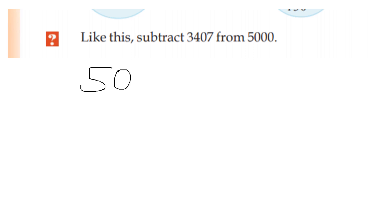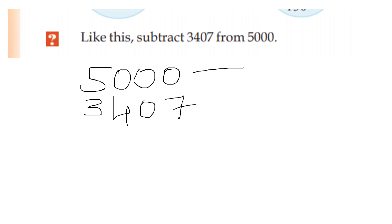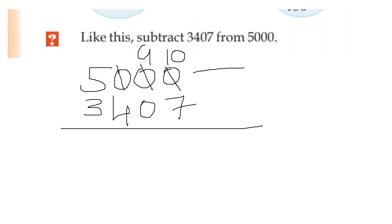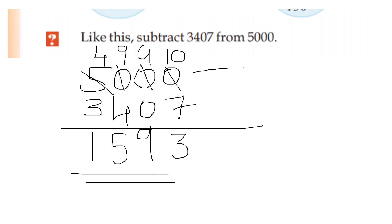5,000 minus 3,407. We will add 0 to 10 and add 9. We will add 0 to 9. We will add 5 to 4. 10 minus 7 is 3. 9 minus 0 is 9. 9 minus 4 is 5. 4 minus 3 is 1. The answer is 1,593.